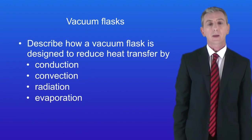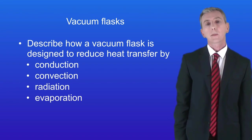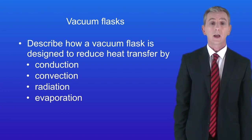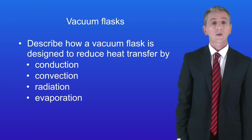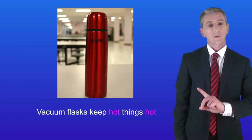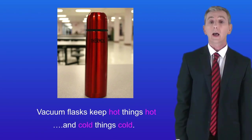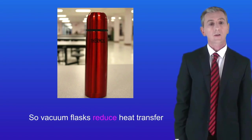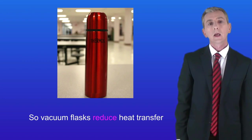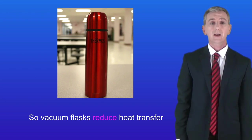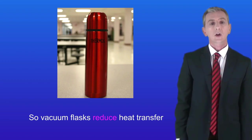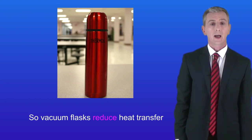By the end of this video you should be able to describe how a vacuum flask is designed to reduce heat transfer by conduction, convection, radiation and evaporation. This has come up as an essay question and may well come up again so you really need to learn this. A vacuum flask keeps hot things hot and cold things cold — in other words, vacuum flasks are designed to reduce heat transfer. We are going to look at how the features of a vacuum flask help to reduce heat transfer. Remember there are four ways that heat energy is transferred: conduction, convection, radiation and evaporation. The vacuum flask is designed to reduce all of these.